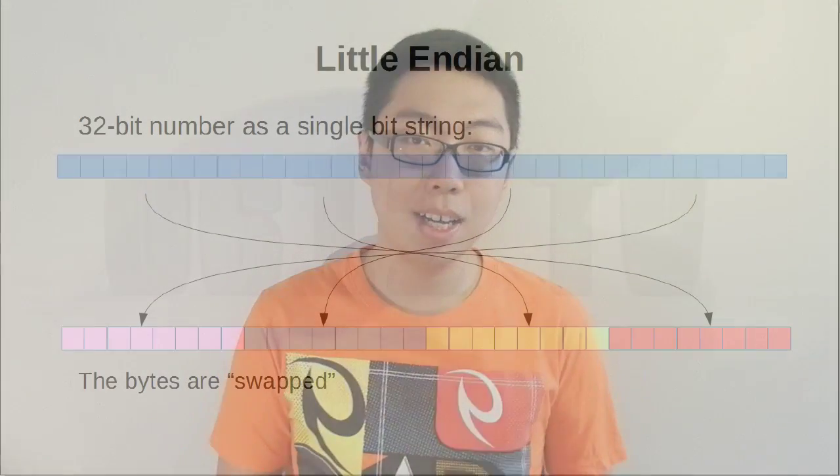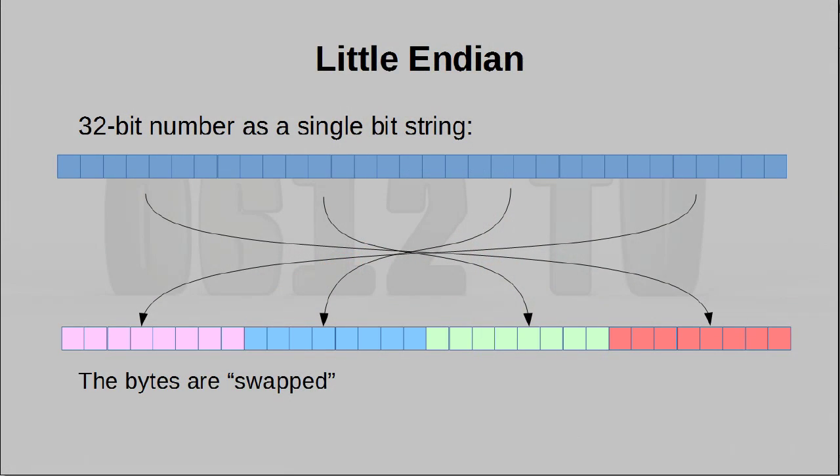As it turns out, if you have a computer running the Intel x86 architecture, that isn't how the numbers are stored. Instead, numbers are stored in little-endian format, which means that all the values are actually inverted. The least significant byte comes first, and then it gets more and more significant as we go down.